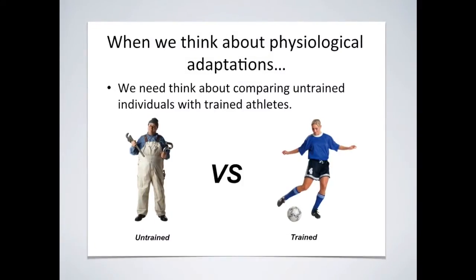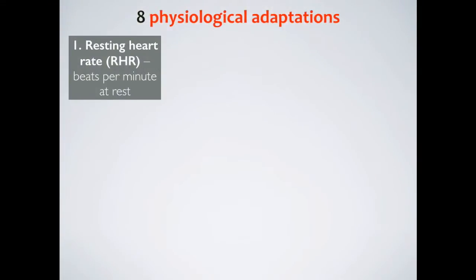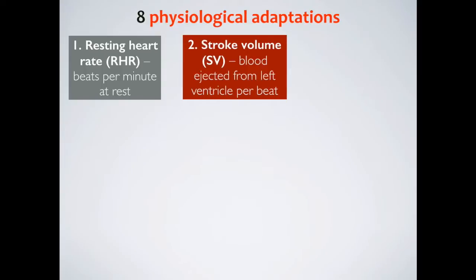When we think about physiological adaptations, it's important to compare untrained individuals with trained athletes. There are eight physiological adaptations that you need to be aware of. The first is resting heart rate, which can be defined as the amount of beats the heart makes per minute at rest.